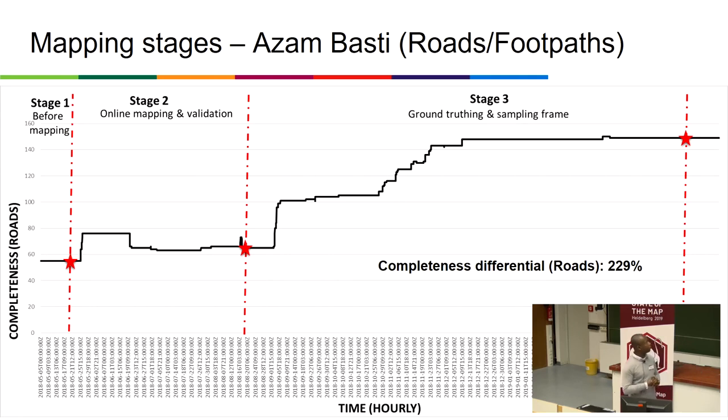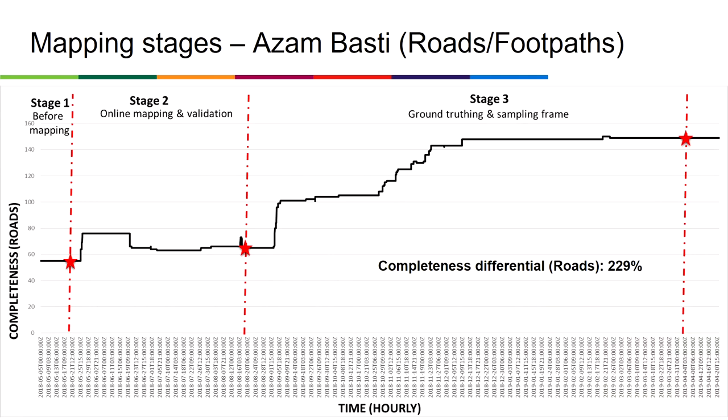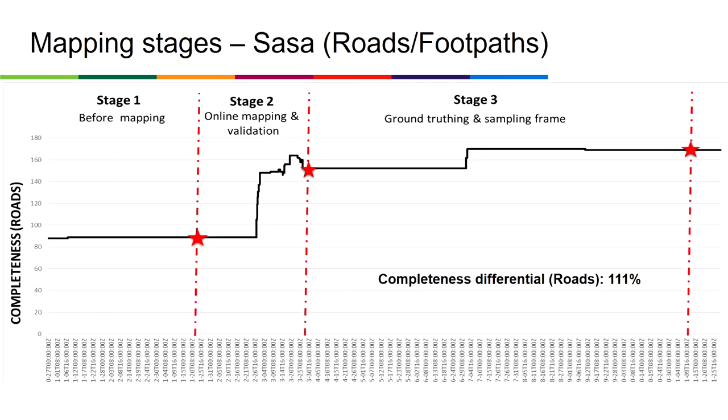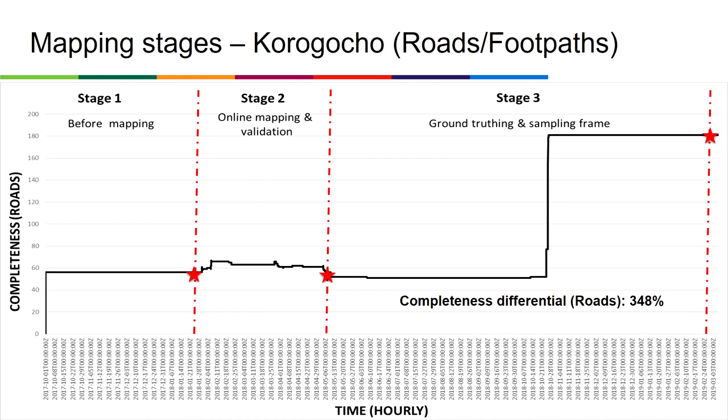For roads, the pattern is slightly different: the estimates at stage three are always higher than stage two — not less. This holds for Shasha, where the difference is small but still higher, and likewise for Korogocho.